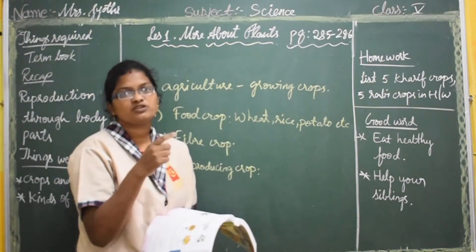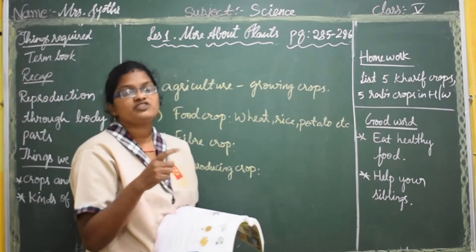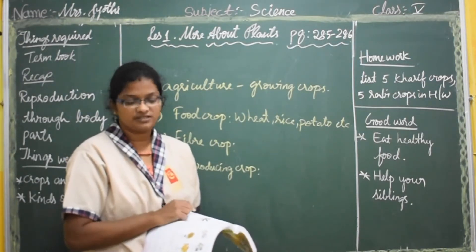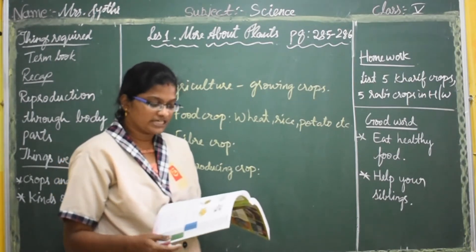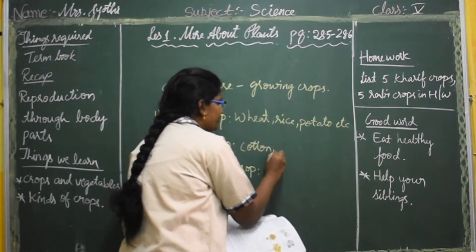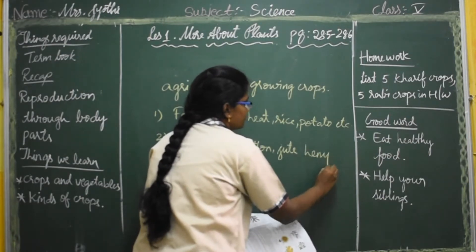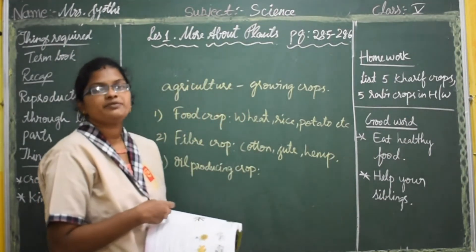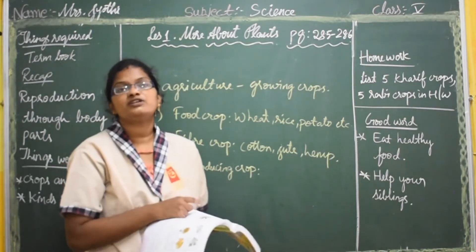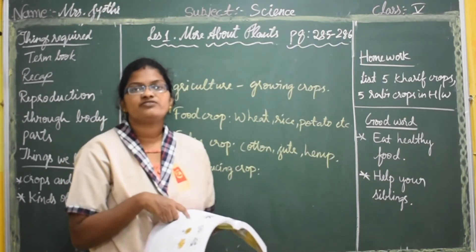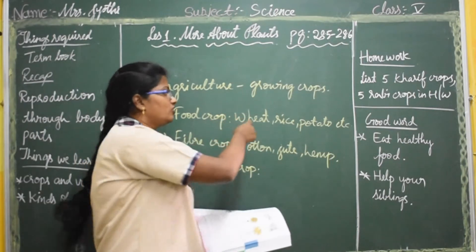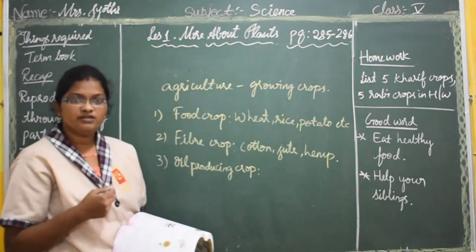With sugar cane we get sugar, which most people use in daily life. Coming to the next one: fiber crops, such as cotton, jute, and hemp. These fiber crops give fiber to us and are useful for industrial purposes. The clothes we wear and the furniture we use all come from fiber crops. So not only food crops, but fiber crops are also very useful to us.